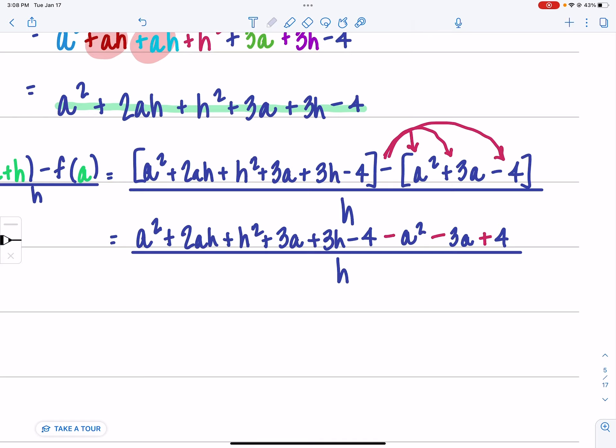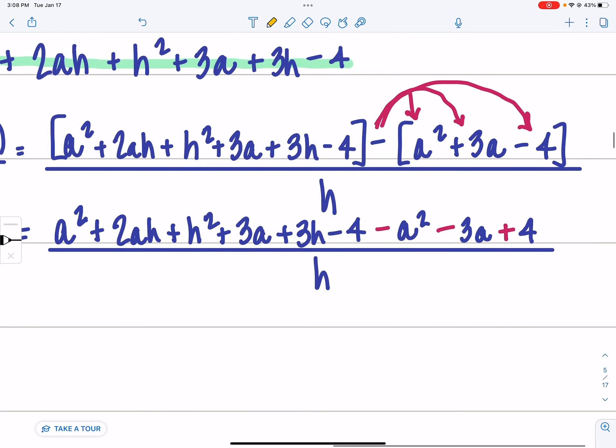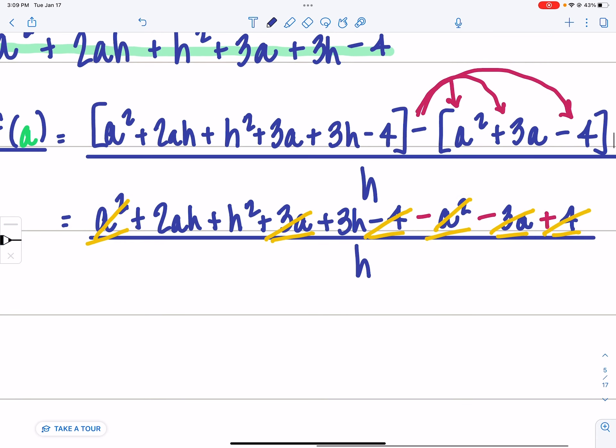So I'm going to try to make this look a little bit better. When I combine my like terms, I have a positive a squared and a negative a squared, those are going to cancel each other out. I see a positive 3a and a negative 3a, those are going to cancel each other out. And I see a negative 4 and a positive 4 that are going to cancel each other out. So I'm left with 2ah plus h squared plus 3h, all over h.